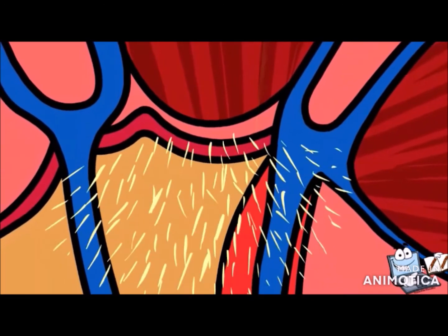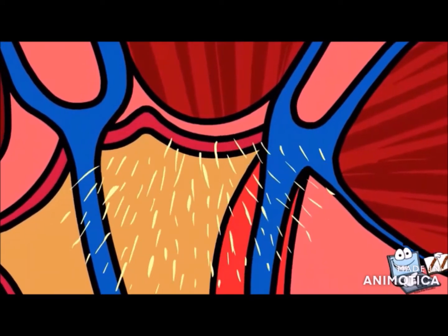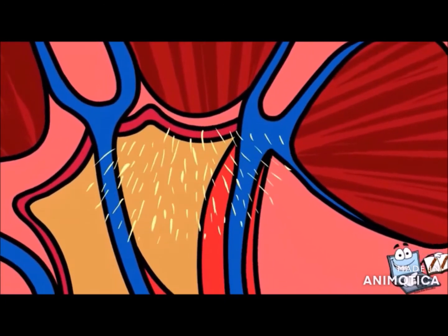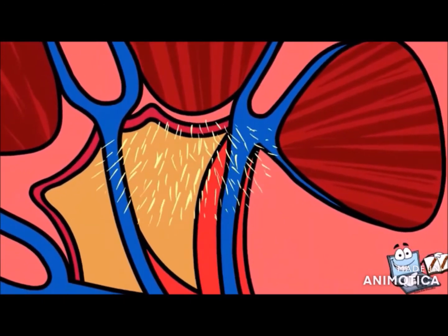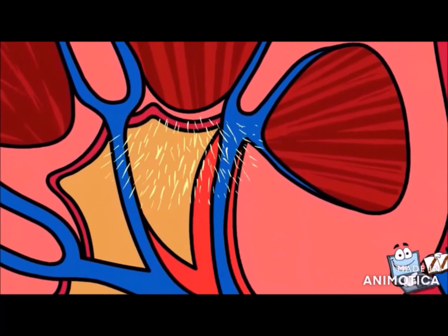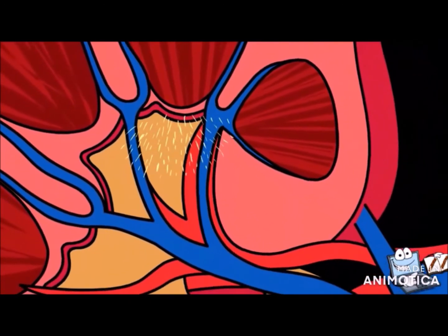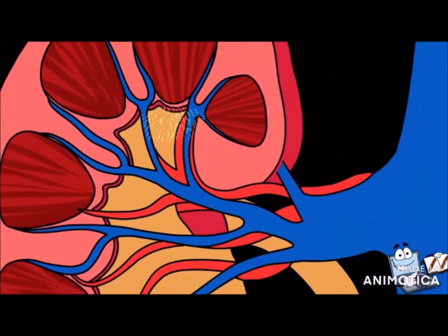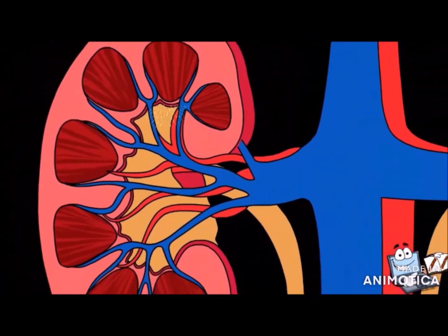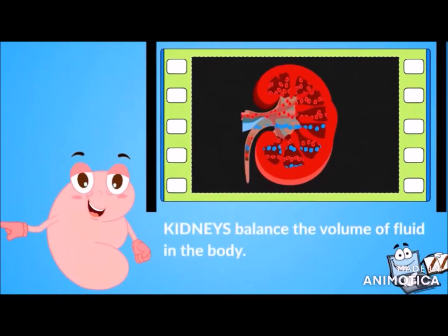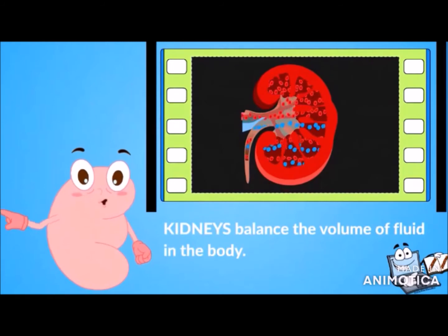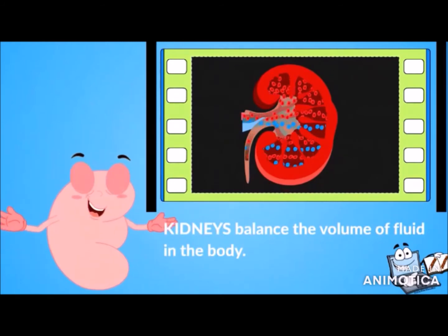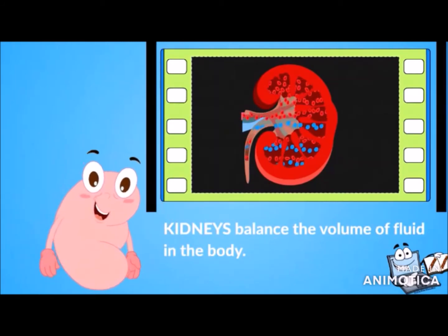There are thousands of nephrons, and each of them makes urine. The liquid drains into the central part of the kidney and then flows down the ureter. The kidneys also balance the volume of fluid in the body.